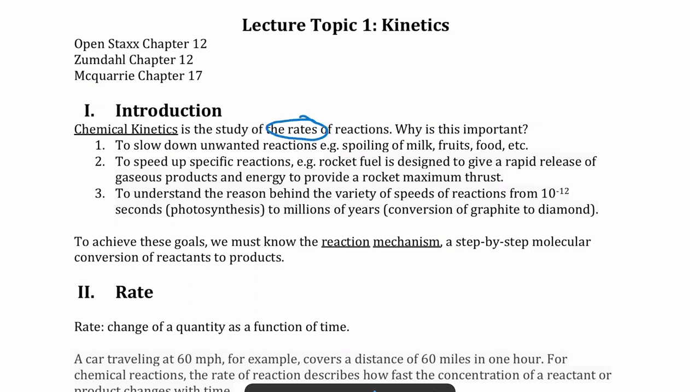There are a bunch of applications that require you to know the rates of reaction. For example, if you want to slow down some unwanted reactions — like milk or fruits or vegetables that are spoiling in the fridge — certain things you can do cause those reactions to take longer to complete. There are also other reactions that you want to speed up that might take forever, but you really want to get done quickly.